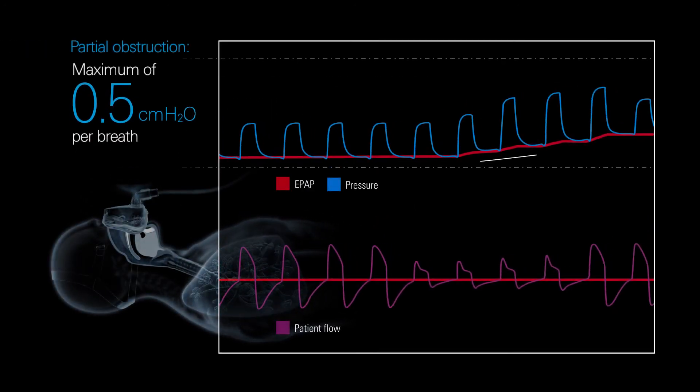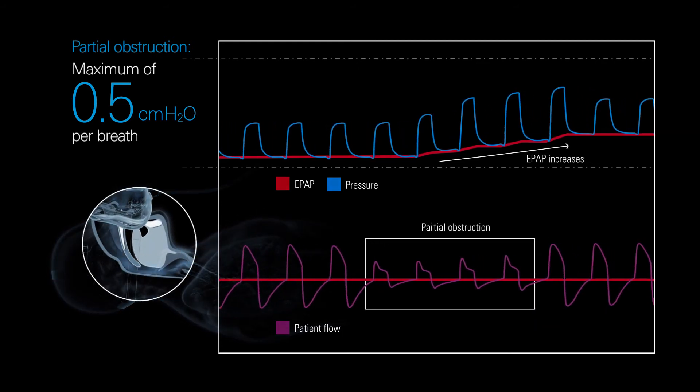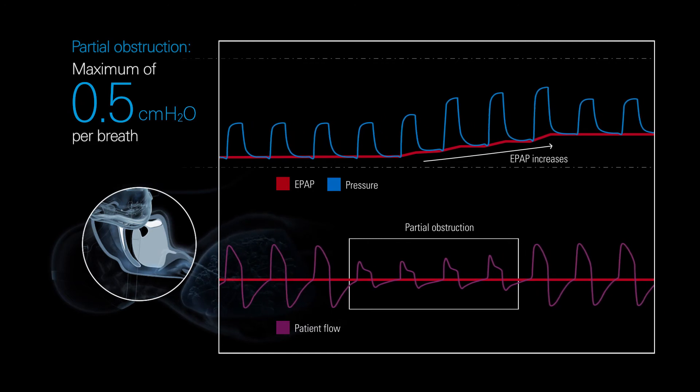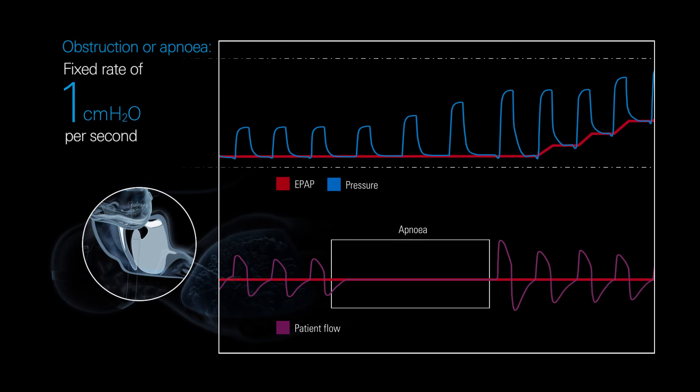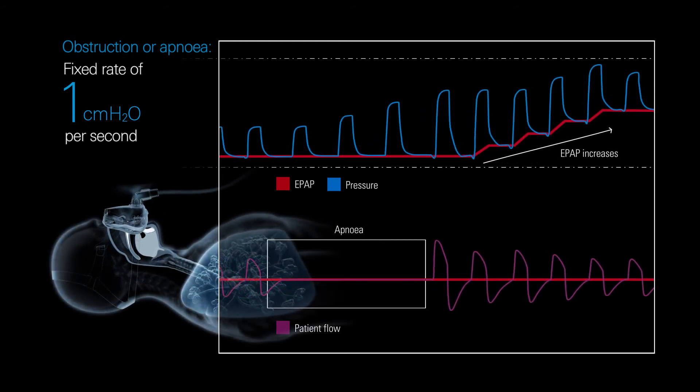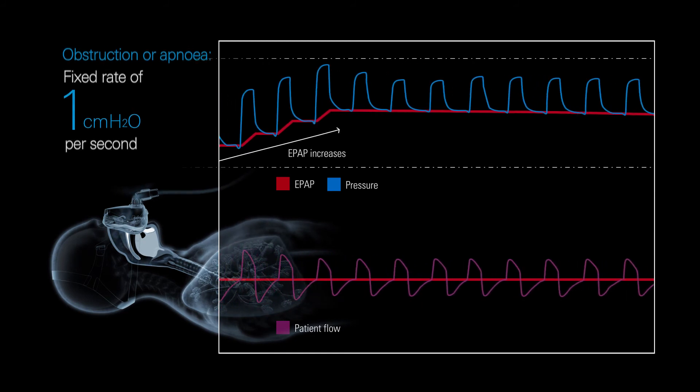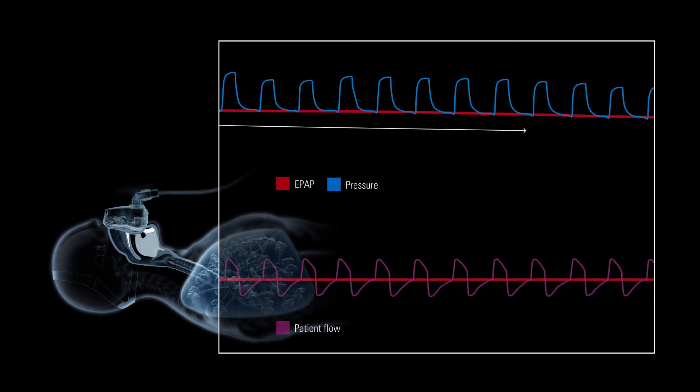To re-establish upper airway patency and prevent future events, Auto-EPAP increases at a maximum rate of 0.5 cm of water per breath for partial obstructions and at 1 cm of water per second for complete obstructions. Once an obstructive event has been addressed, EPAP gradually declines to maintain upper airway patency while preserving breathing comfort.